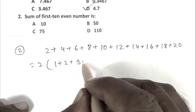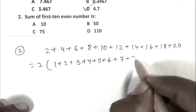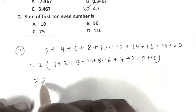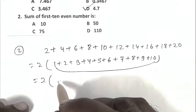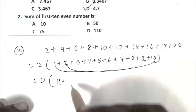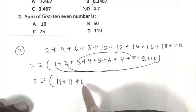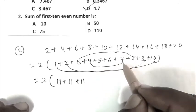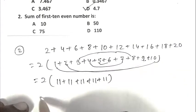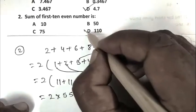Taking 2 as common: 2 times (1 plus 2 plus 3 plus 4 plus 5 plus 6 plus 7 plus 8 plus 9 plus 10). We can write 2 times: these two add to 11, these two 11, these two also 11, these two 11, and these two 11. So 2 multiplied by 55, that is 110. D is the right answer.